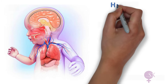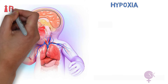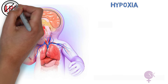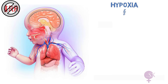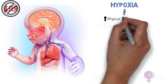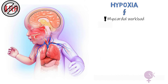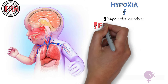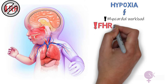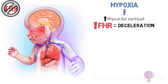When a fetus is faced with hypoxia, it is unable to increase its respiratory rate. So instead, it decreases the myocardial workload to use up less oxygen. It does this by decreasing the heart rate, which results in a deceleration. The aim here is to decrease the amount of oxygen being used up by the heart and divert it to other vital organs, such as the brain.